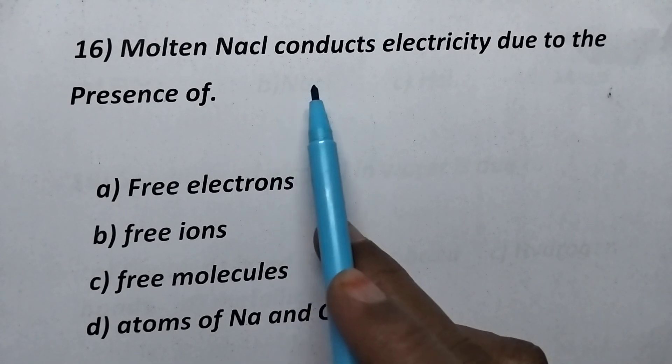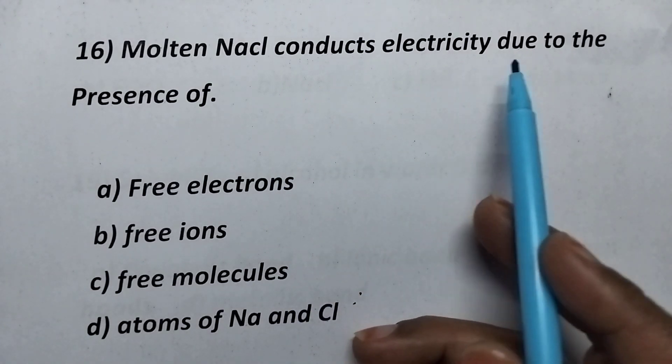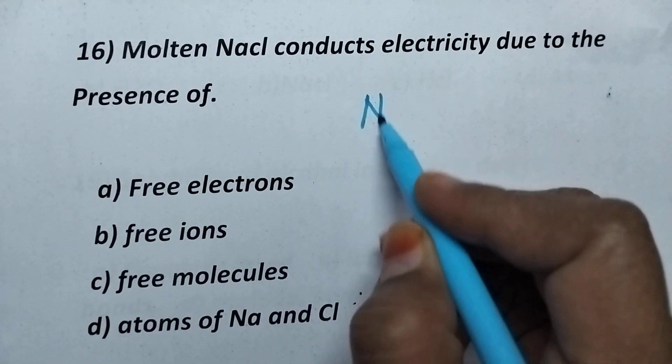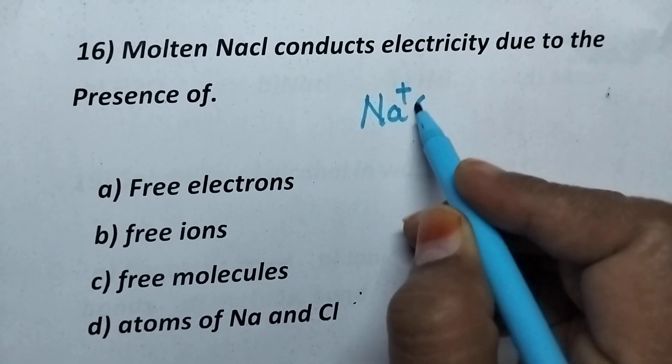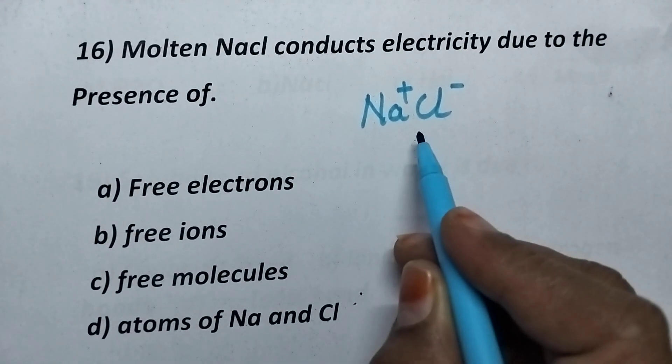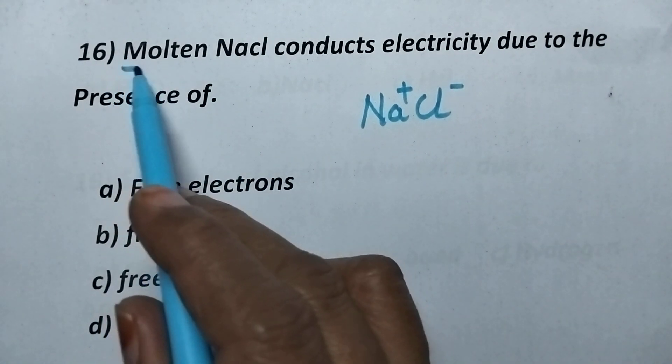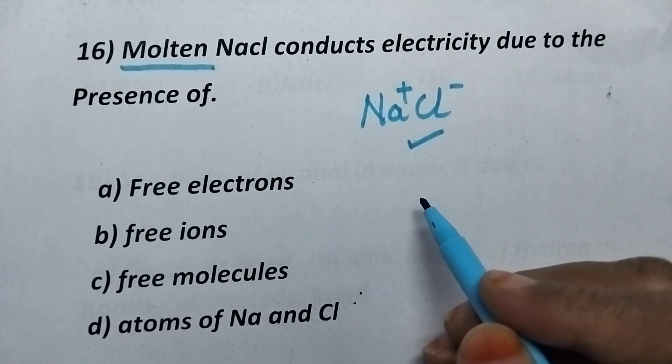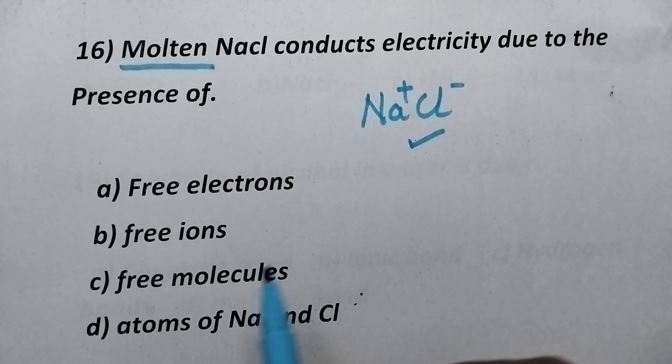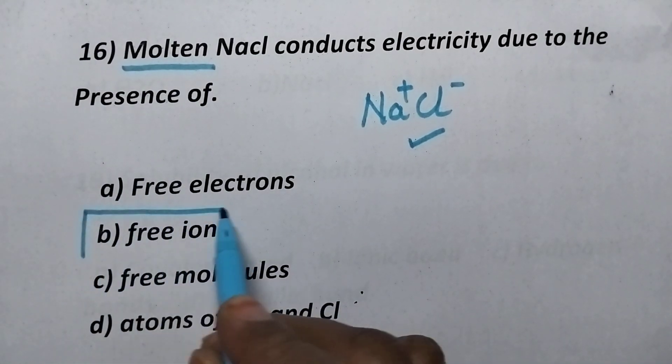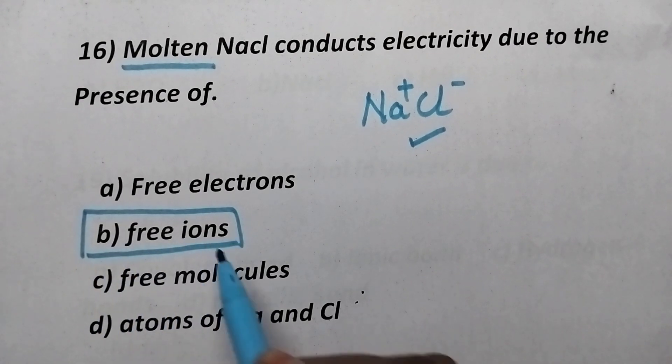Molten NaCl conducts electricity due to the presence of. Generally, ionic compounds contains ions. NaCl is actually Na plus Cl minus. So, whenever the NaCl is present in the molten state, these ions are available in the free state. So, due to the presence of free ions, molten NaCl conducts electricity. So, option B, free ions is the right option.